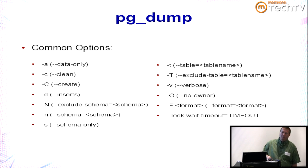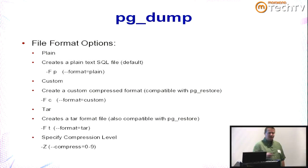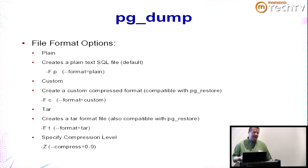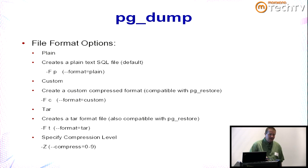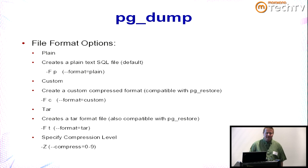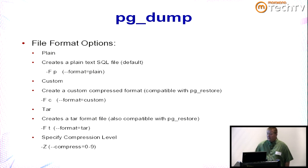For file format options: if you don't specify the -F flag you get a plain flat SQL file. -Fc is the custom binary format and -Ft is tar format. You can also specify a compression level with -z from 0 to 9. The trade-off is that higher compression takes longer but gives more disk savings.